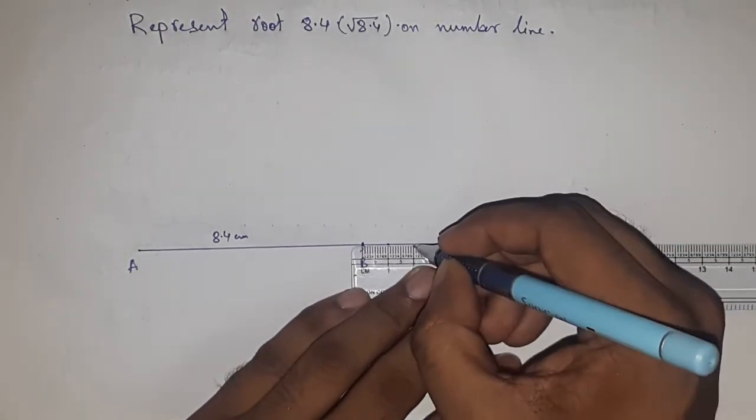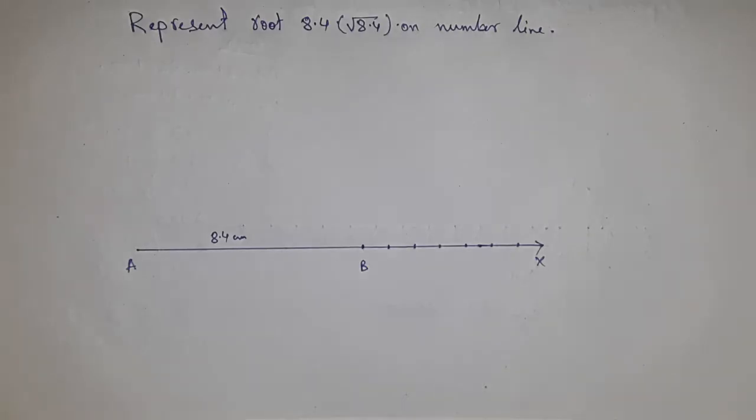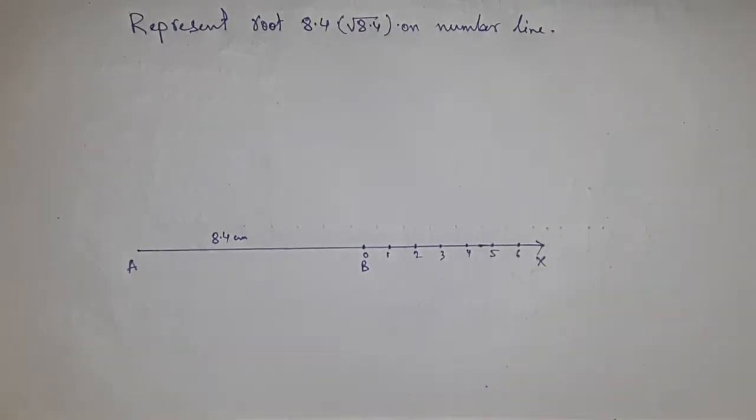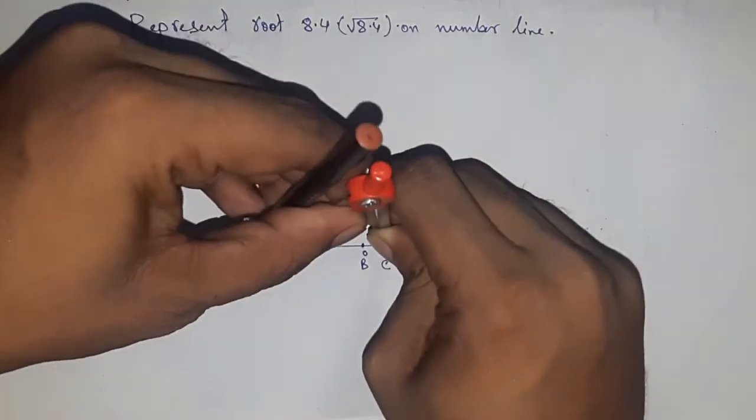Next, we mark the numbers on the line from B to X using a scale. This is 0, 1, 2, 3, 4, 5, 6, and so on. Taking this as point C, now we bisect the line AC.